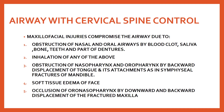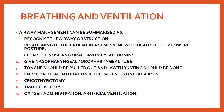Another cause of airway obstruction is obstruction of the nasopharynx and oropharynx by the backward displacement of the tongue and its attachment, as in a symphysial fracture of the mandible. If there is a symphysial fracture, posterior/backward displacement of the tongue obstructs the nasopharynx and oropharynx. Soft tissue edema of the face and occlusion of the oronasopharynx by downward and backward displacement of the fractured maxilla can also lead to airway obstruction.